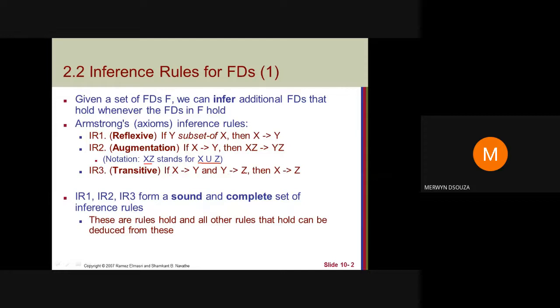To restate the transitive rule: if X determines Y and Y determines Z, then X determines Z. So this Y can be replaced with Z.